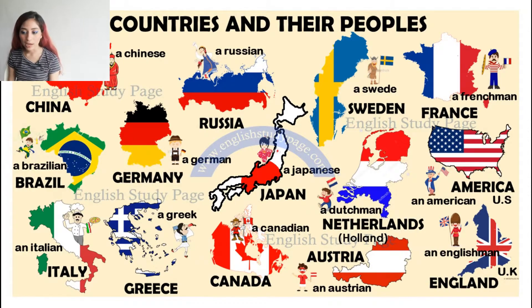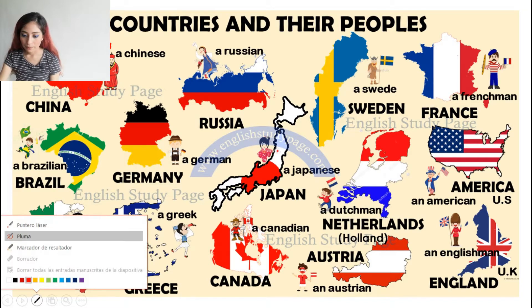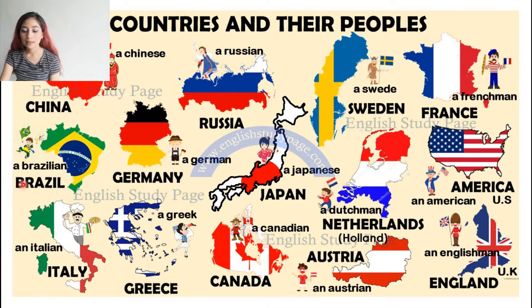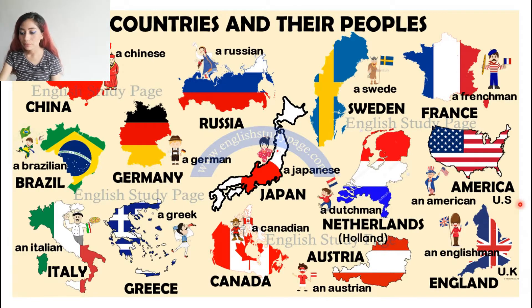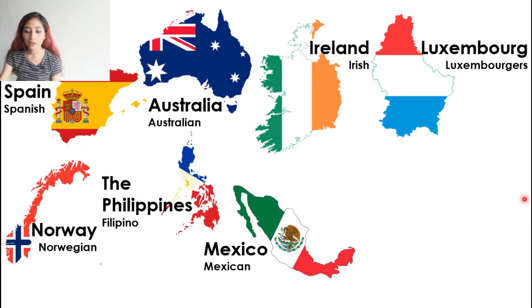Countries and their people. I want you to repeat with me please: China, Brazil, Italy, Greece, Germany, Russia, Japan, Canada, Austria, Netherlands or Holland, Sweden, France, United States or America, England or UK — remember UK means United Kingdom and US means United States. We also have other countries such as Spain, Norway, Philippines, Mexico, Ireland, and Luxembourg.